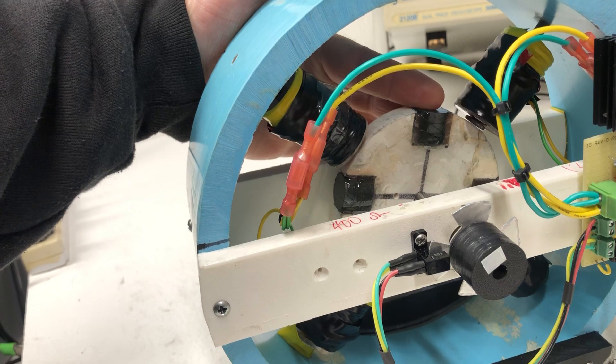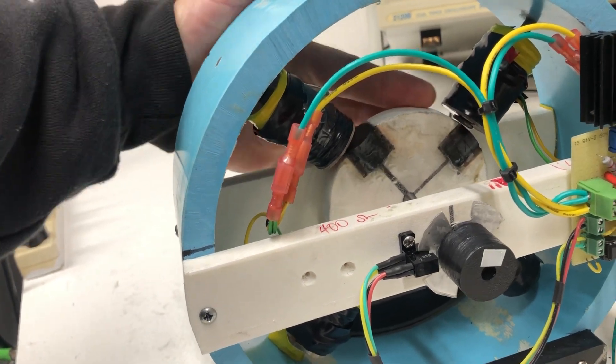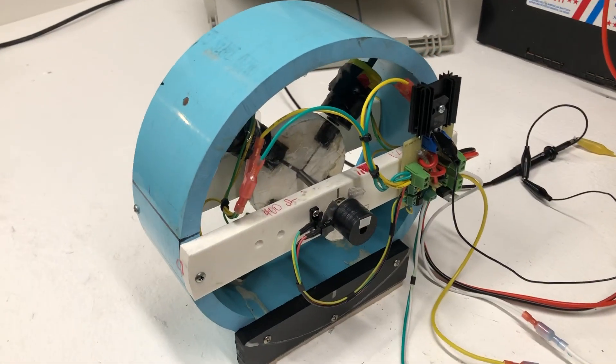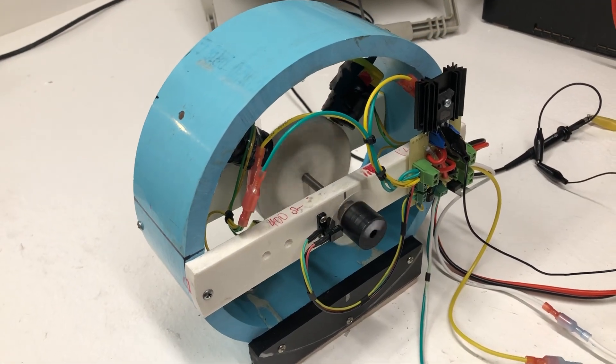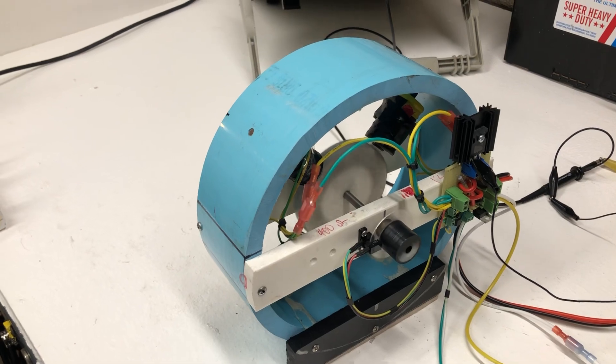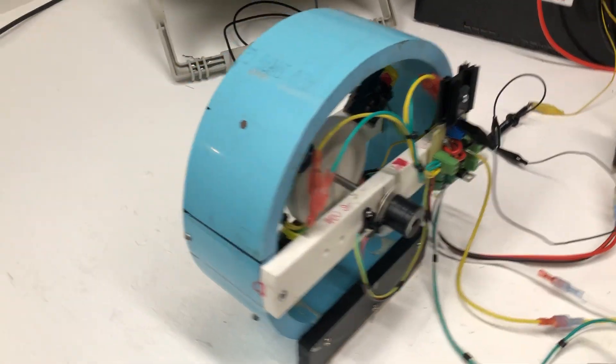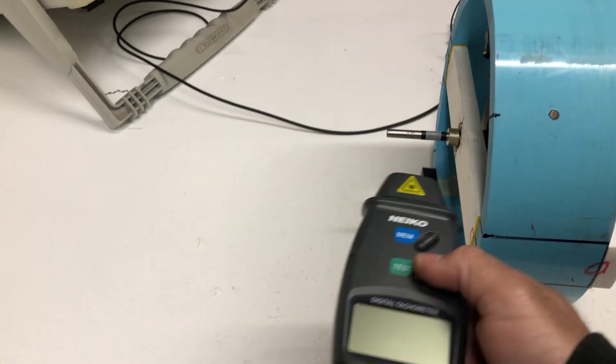So repulsion now it's going to go this way, so it's going to attract here with no electricity, and then it's going to fire and push it away. So this will actually start all by itself, which is quite convenient. But what's interesting is it's just a hair slower.